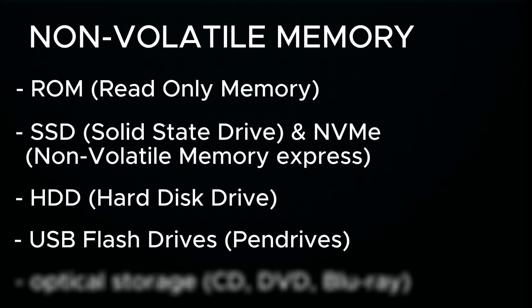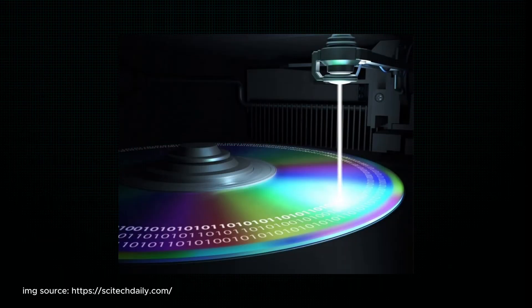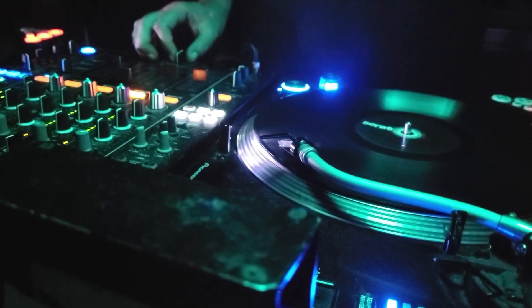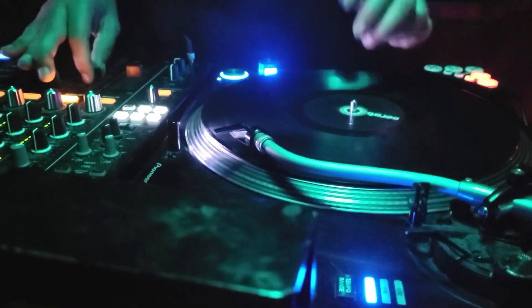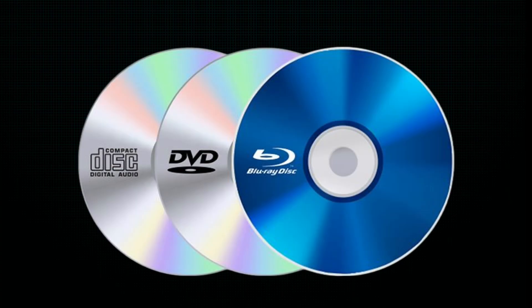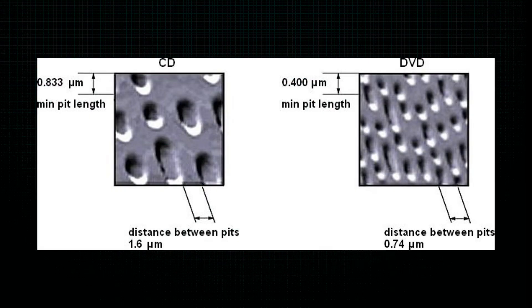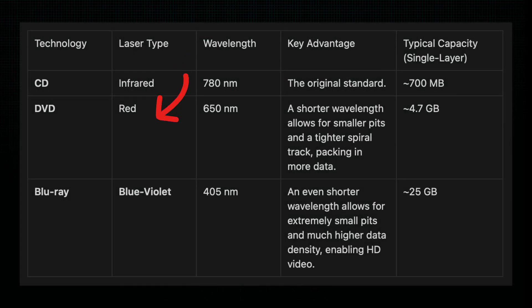Last category: optical storage — like CDs, DVDs, and Blu-rays. This category of storage is fundamentally different from the semiconductor-based memories we've discussed. Instead of using transistors and electrical charges, optical storage uses a laser to read and write data on a spinning disk. Data is stored as a series of microscopic physical indentations called pits and flat areas called lands, all on a reflective material layer within the disk. The main difference between CDs, DVDs, and Blu-rays lies in their data density, achieved by using different types of lasers. By moving from an infrared laser to red and finally to blue, engineers were able to shrink the size of the pits and lands, allowing far more data to be stored in the same physical space.